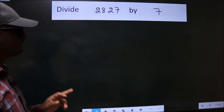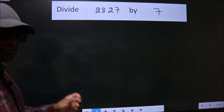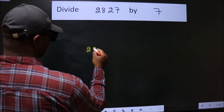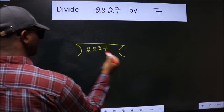Divide 2827 by 7. To do this division, we should frame it in this way. 2827 here, 7 here.